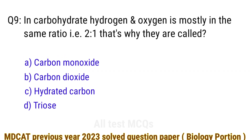Question number 9. In carbohydrates, hydrogen and oxygen are mostly in the same ratio — for example, 2:1. That is why they are called? The right answer is option C: hydrated carbon.